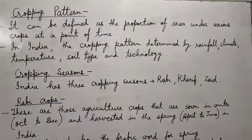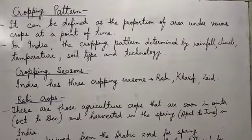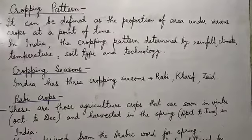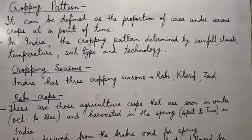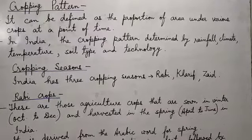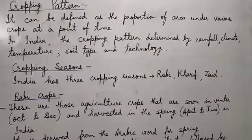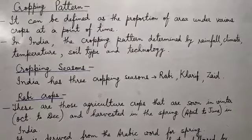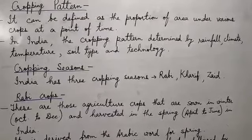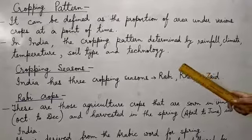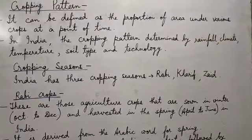The next topic is cropping pattern. Before starting, you must know what crops actually are. When plants of the same kind are grown and cultivated at one place on a large scale, it is called a crop. Cropping pattern comprises all components required for the production of a particular crop, and can be defined as the proportion of area under various crops at a given point of time.